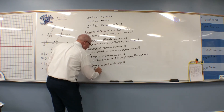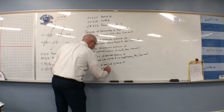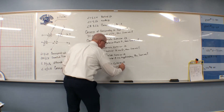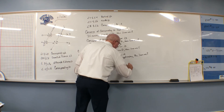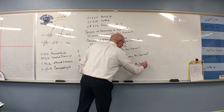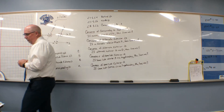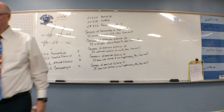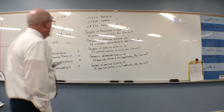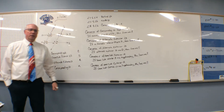The converse of same side exterior angles: if same side exterior angles are supplementary, then lines are parallel. Keep in mind that all of them end with 'then lines are parallel.' We're trying to prove two lines are parallel. It looks like there are five ways to prove two lines are parallel — all through the angles.